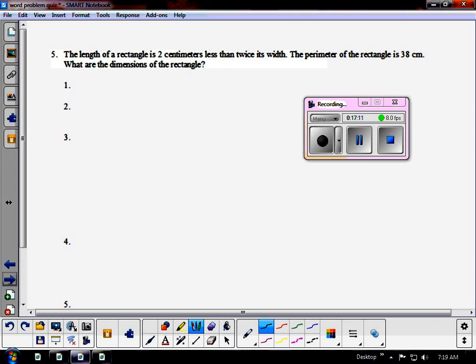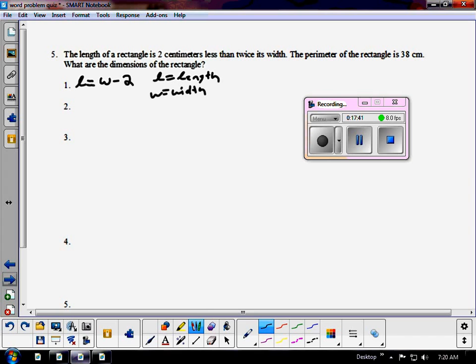Let's look at number 5. The length of a rectangle is 2 centimeters less than twice the width, the perimeter of the rectangle is 38. What are the dimensions of the rectangle? So, L equals the length. W equals the width. And the perimeter rectangle is 38. So, we have to be careful with this because we want one variable. So, if L equals 2W minus 2. 2 centimeters less than twice the width. So, L equals twice the width minus 2.